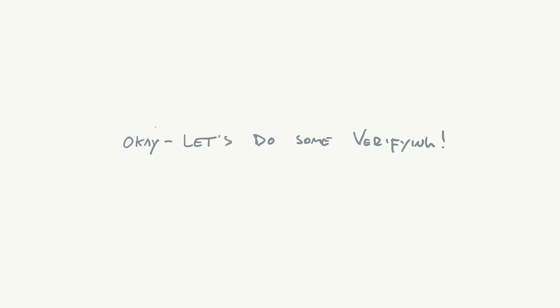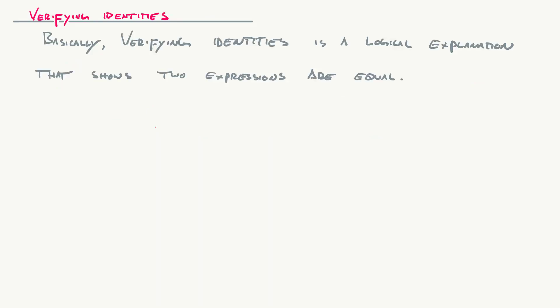So let's do some verifying — let's do some examples. Verifying an identity is almost a directed simplification. In the last video we talked about simplifying, but that's subjective. The cool thing about verifying identities is that you actually know what you're trying to make the thing simplify into. Basically, verifying identities is a logical explanation that shows why or how two expressions are equal.